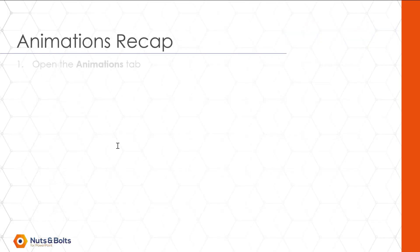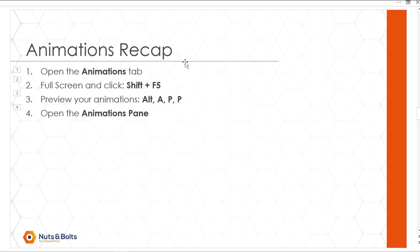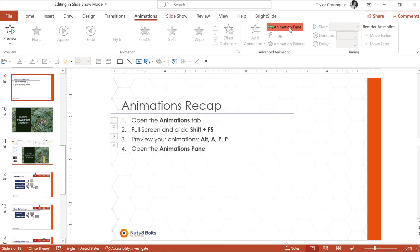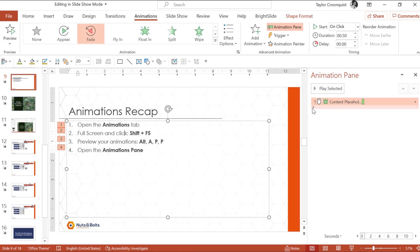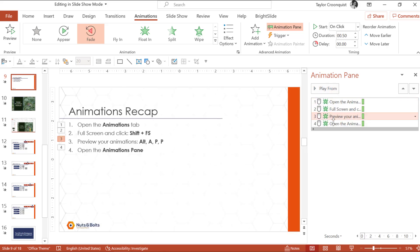As a third option, you could also open the animations pane. If you come to Animations and open the Animations Pane, you can click in and play your animations from specific points within the pane. So to summarize: open the animations tab to see all animations, then either Shift+F5 your way through them, Alt+A+P+P to run them all at once, or use the Animations Pane to play from specific points.